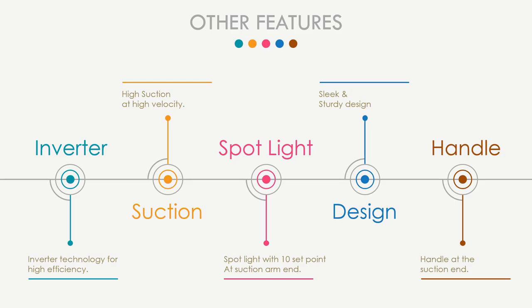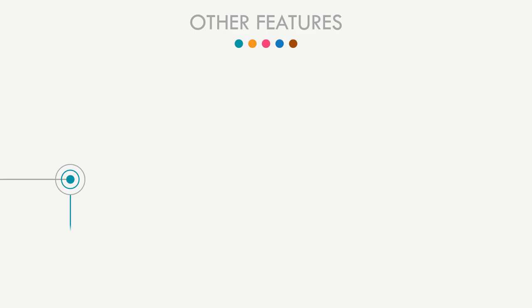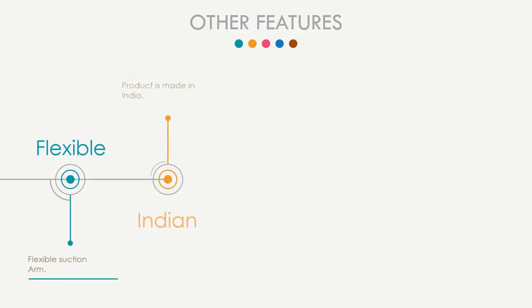EDS-2000 has a built-in power LED spotlight with 10 intensity set points, which is sufficient to perform dental procedures. Knowing that dental procedure rooms are already filled with many machines and instruments, the design team created a sleek yet sturdy machine. It has a handle at the end of the suction arm for ease of use, and the suction arm is highly flexible.